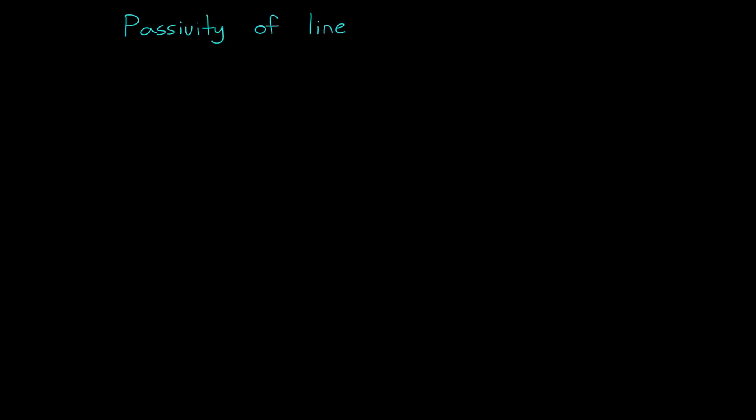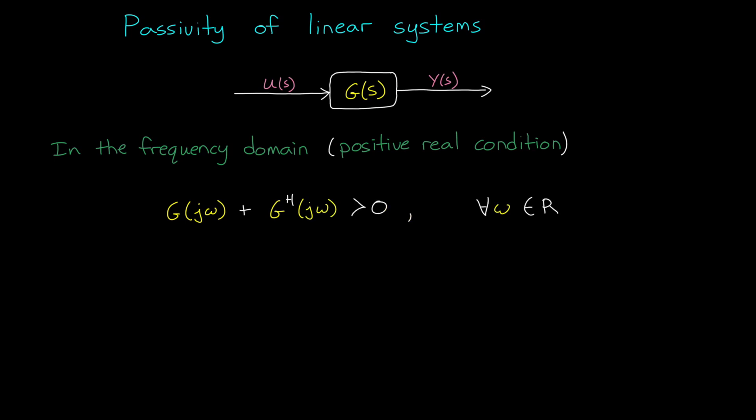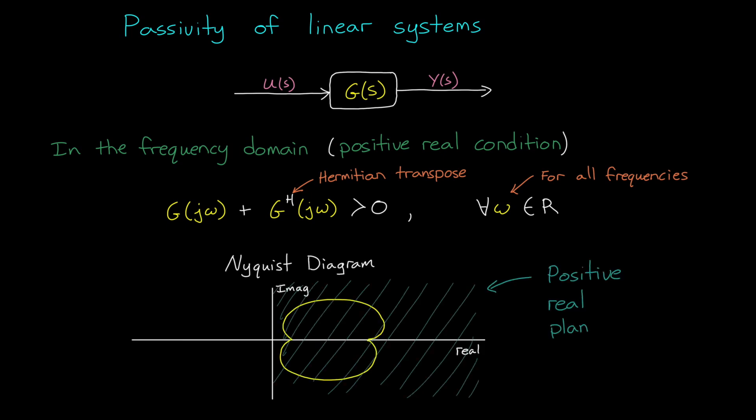In there, they show how an infinite sum of modes governed by the transfer function alpha s over s squared plus 2 zeta omega s plus omega squared is known to be passive. Therefore, adding more modes into our model, or changing the existing mode shapes, won't affect passivity because they still adhere to this summation structure. When we're talking about linear systems like this, checking for passivity becomes a lot simpler. In the frequency domain, passivity is equivalent to the positive real condition.